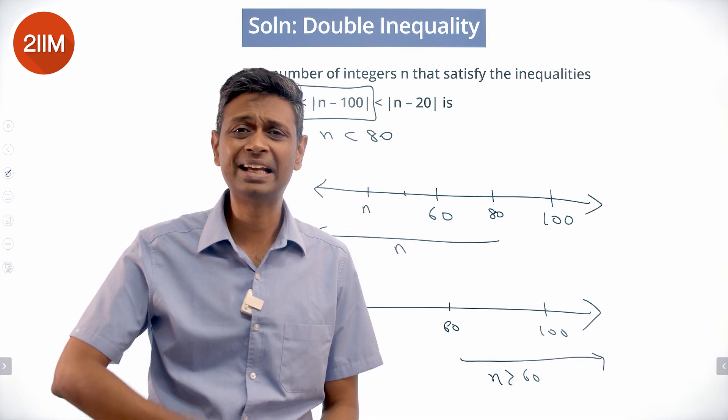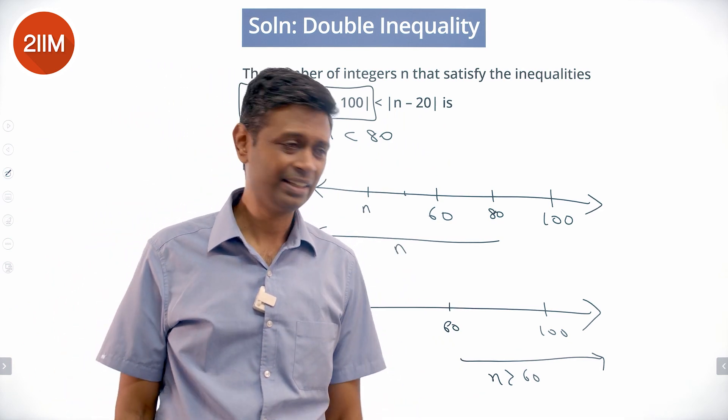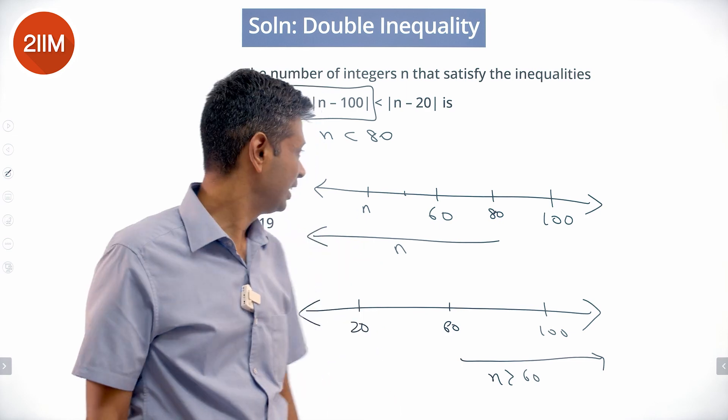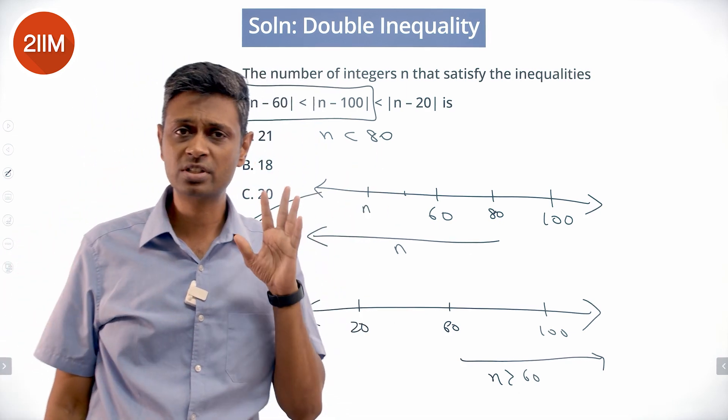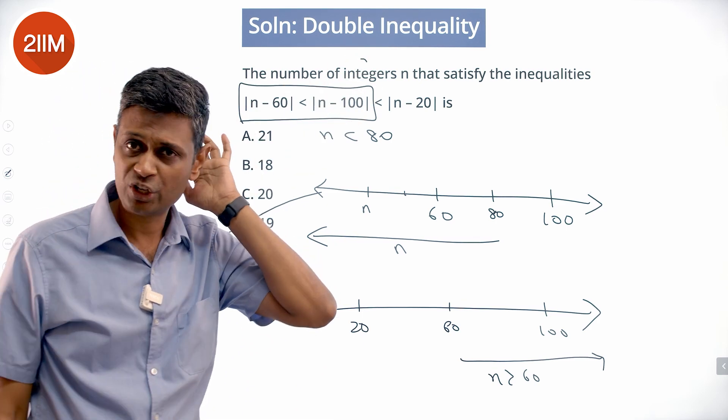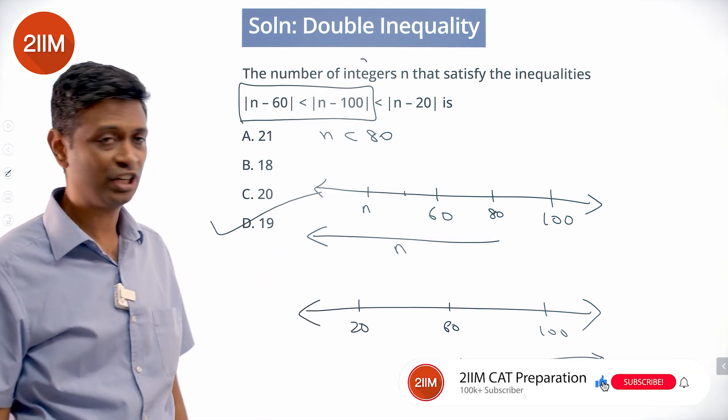We're looking for numbers greater than 60, less than 80: 61 to 79, 19 different numbers. That's the answer. 61, 62, 63, 64 till 79. Clearly we are looking at integers, not a range, so 19 different integers work, 61 through to 79.